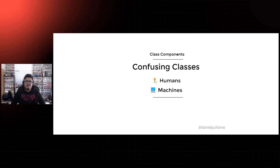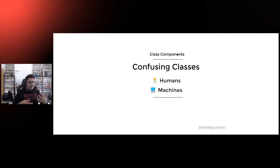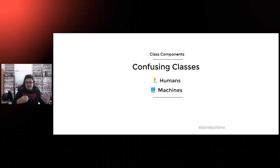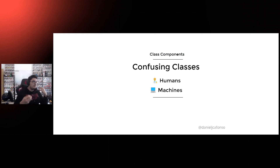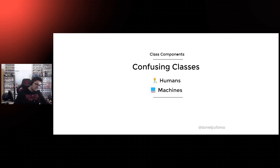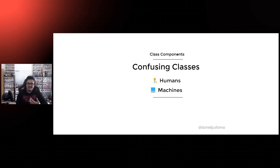Finally, class components can be confusing for humans and for machines. For humans, you have to properly understand how classes work, how 'this' works, and event bindings just to get started working with React. The React team has also publicly mentioned a couple of times that even for machines they had issues with compiling classes and the minification process. So classes themselves had their fair share of issues, and at that point hooks had come out and we decided to give them a go.